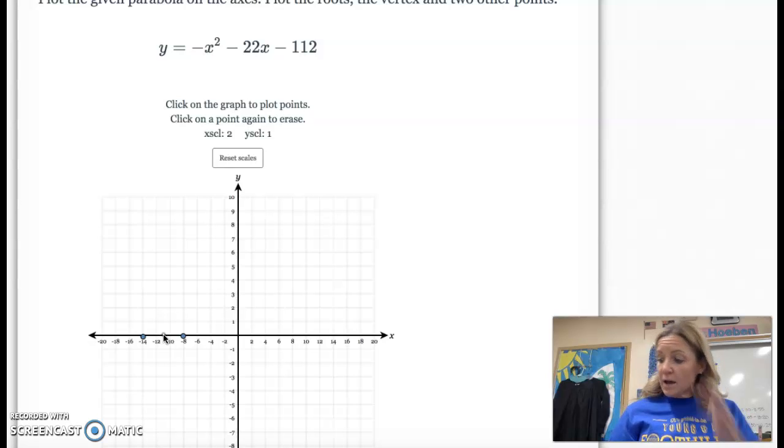So if you plug negative 11 in, you're going to get out positive 9. So negative 11, go up 9. So you would just take negative 11 and square it, then take the opposite. Then you would multiply negative 22 times negative 11 minus 112. You should get 9. I'd do that in a calculator because that one's crazy.